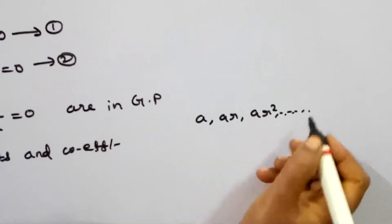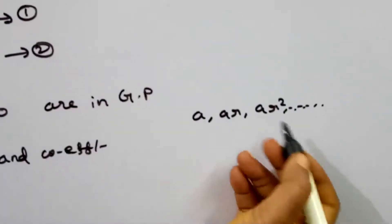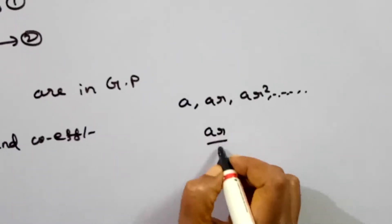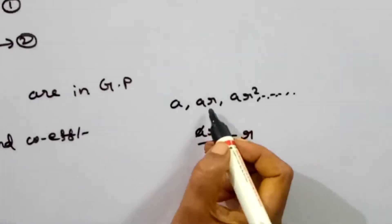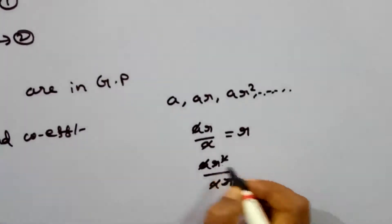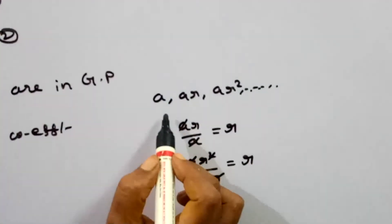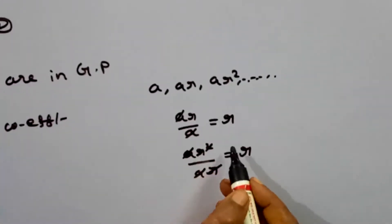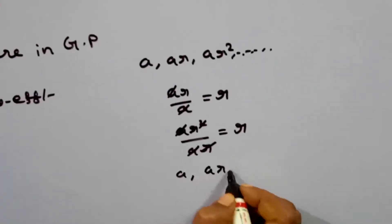In geometric progression, a sequence has a first term and a common ratio. We will mark the sequence in geometric progression. For a cubic equation whose roots are in GP, we take the three roots in a standard form using the common ratio. How do we represent ar²?